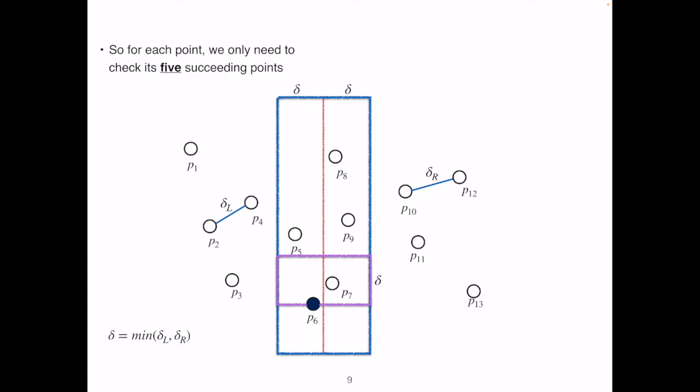For each point, for instance, p6, we only need to check its five succeeding points above it. Since five is a fixed number, the time complexity for checking each purple box is big O of one,